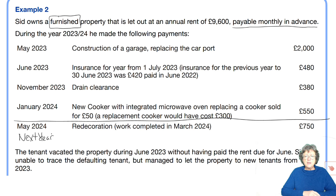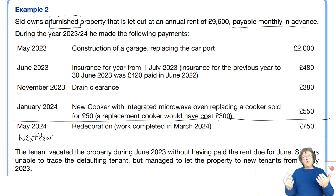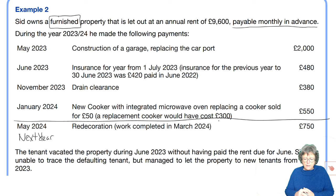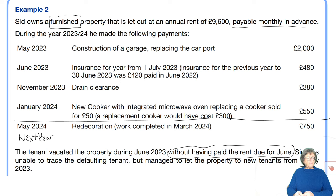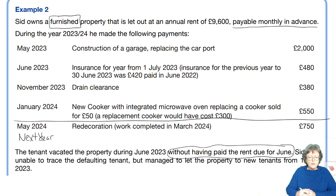There's some drain clearance and a new cooker with an integrated microwave, replacing the old cooker, which was sold for £50. This is an improvement, because it tells you the replacement equivalent cooker would cost £300 — so they're giving you two options and you have to choose the correct one to include. The tenant vacated the property during June without having paid the rent. He did not pay his rent and they were unable to trace the defaulting tenant, but managed to let from the 1st of July.